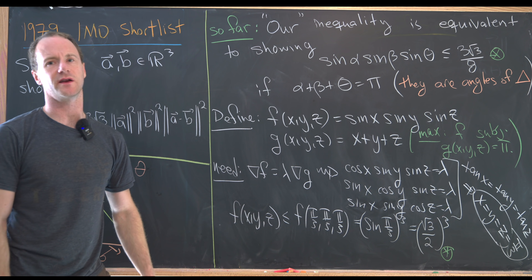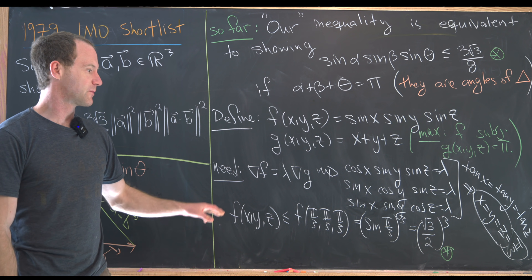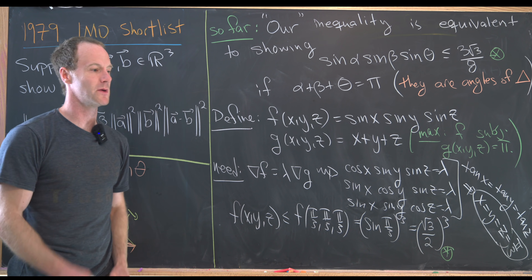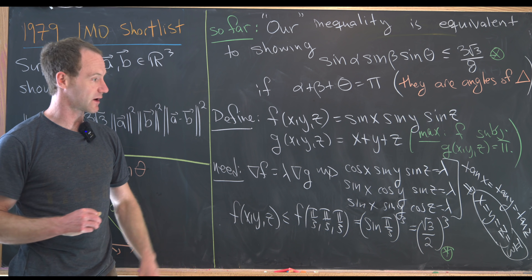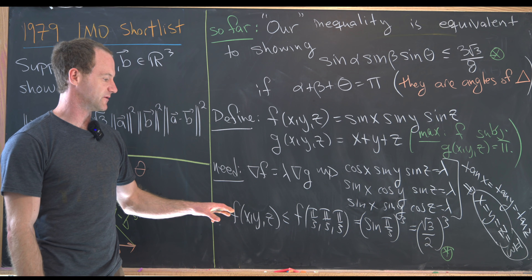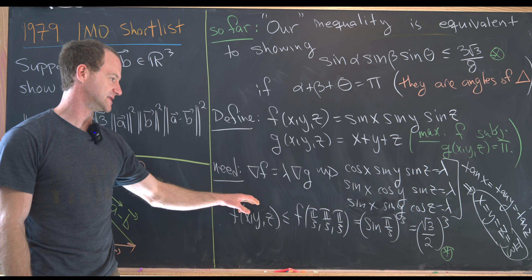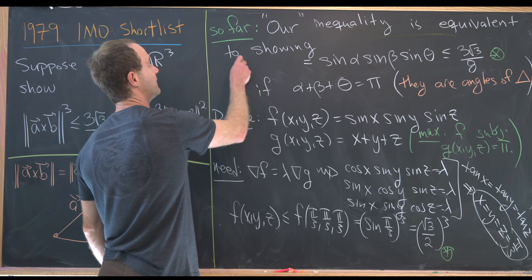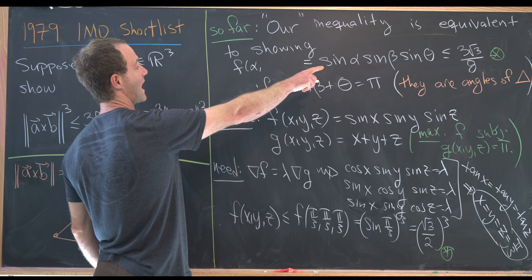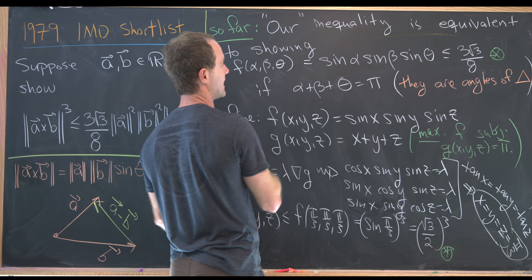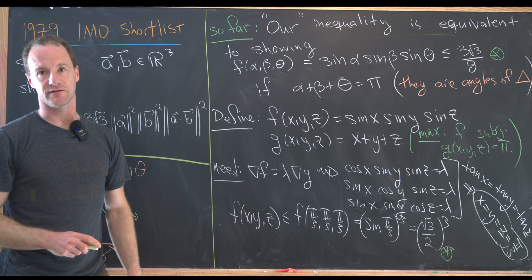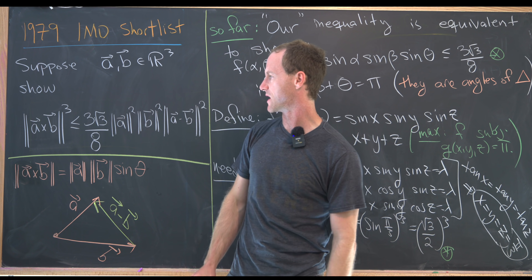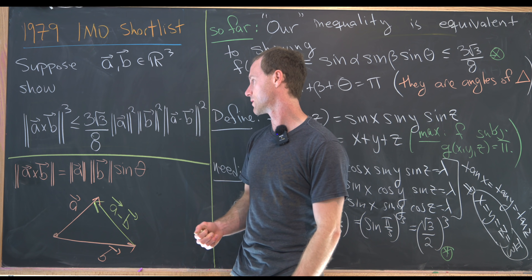This inequality requires a little bit more checking — we know that pi over 3, pi over 3, pi over 3 is either a maximum or a minimum, and we can verify which by using a test point. Applying f to the values alpha, beta, theta and looking at the extreme left and right-hand sides, and recalling that this inequality was equivalent to the original one by the algebraic manipulation we did earlier, we're good to go.